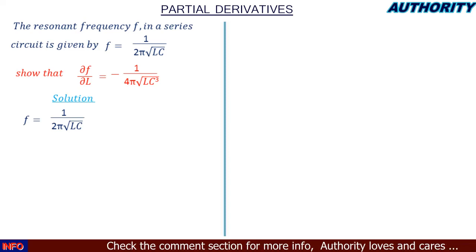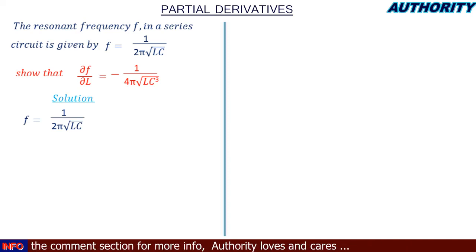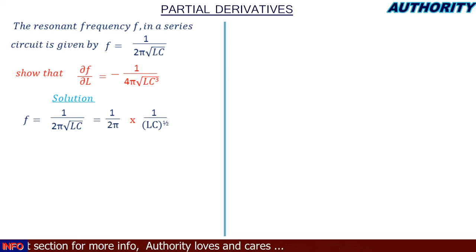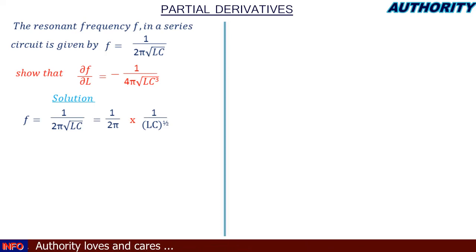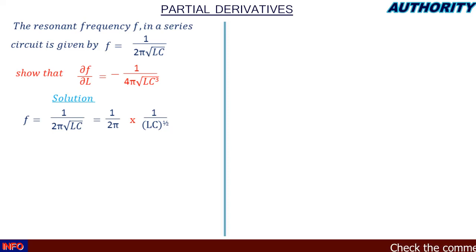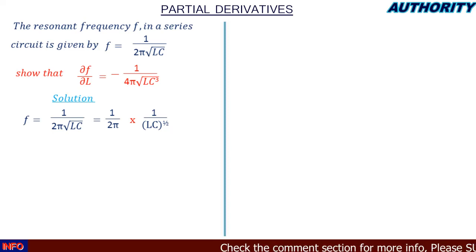Let's split this into two parts. We can write it as (1 / 2π) × (1 / (LC)^(1/2)), since the square root is the same as raising to the power of 1/2. We then factor out 1/(2π) multiplied by (LC)^(1/2), which is still the same expression.